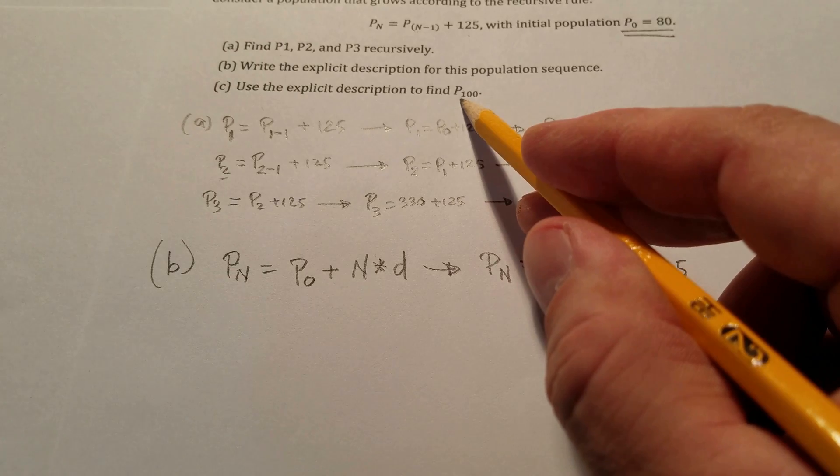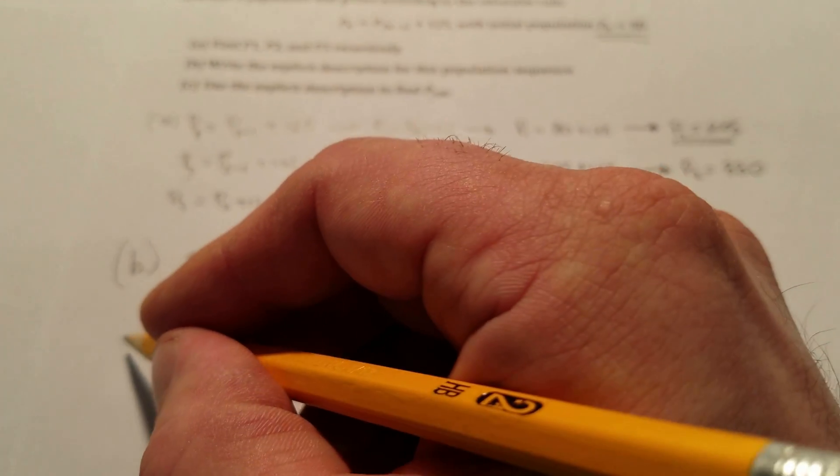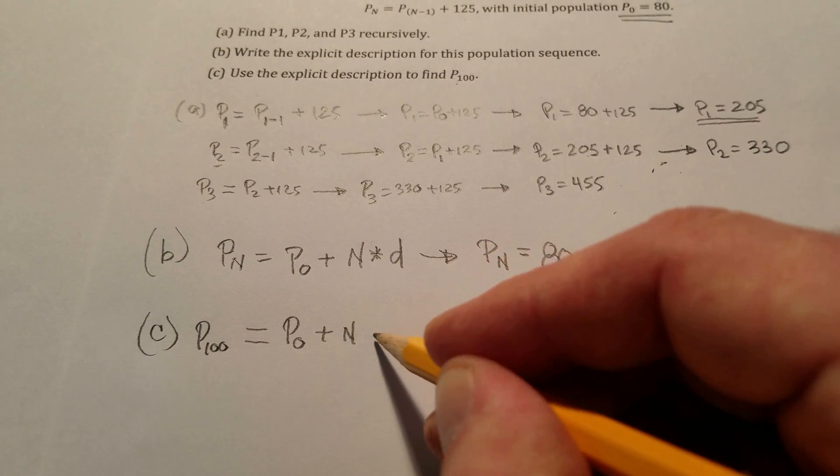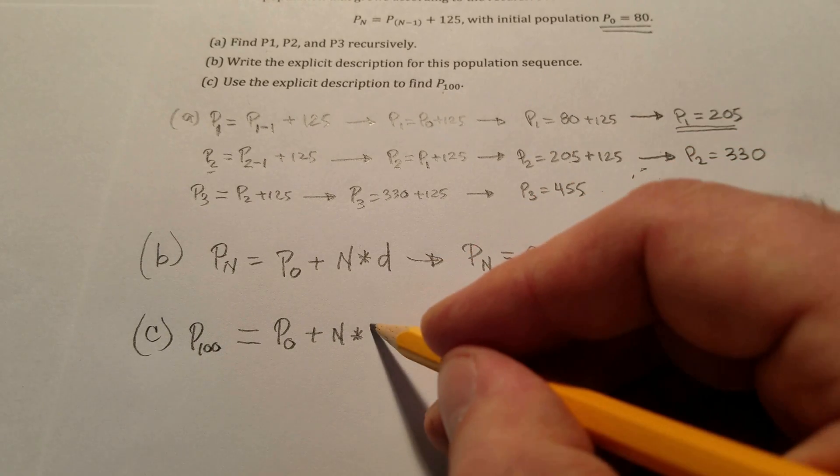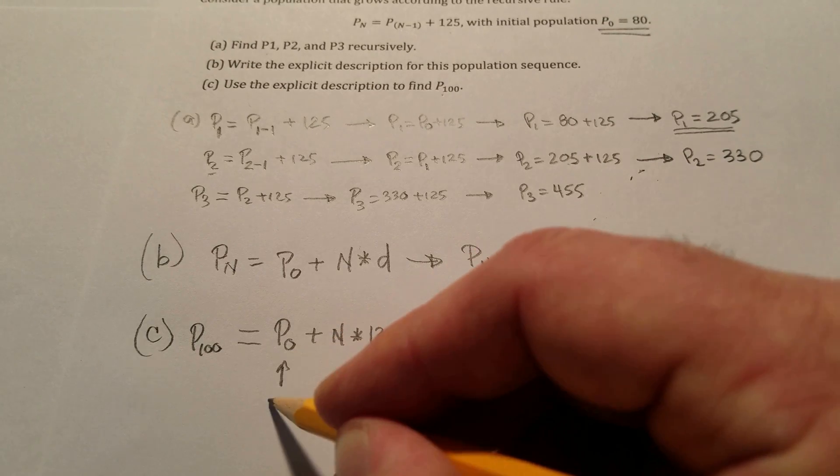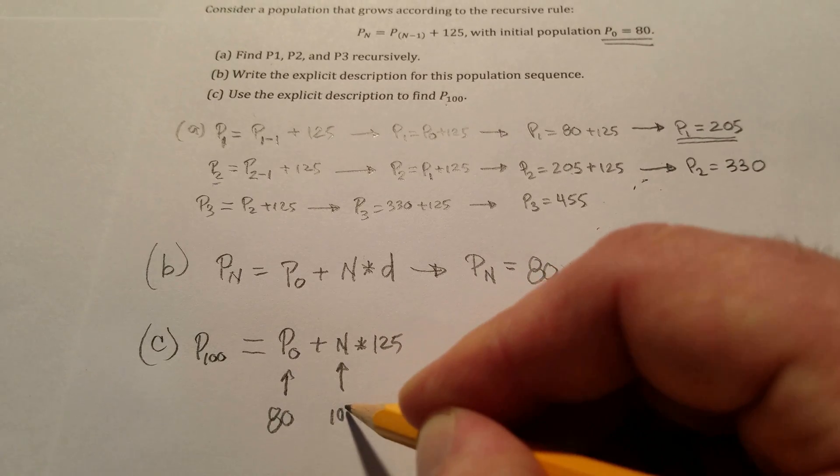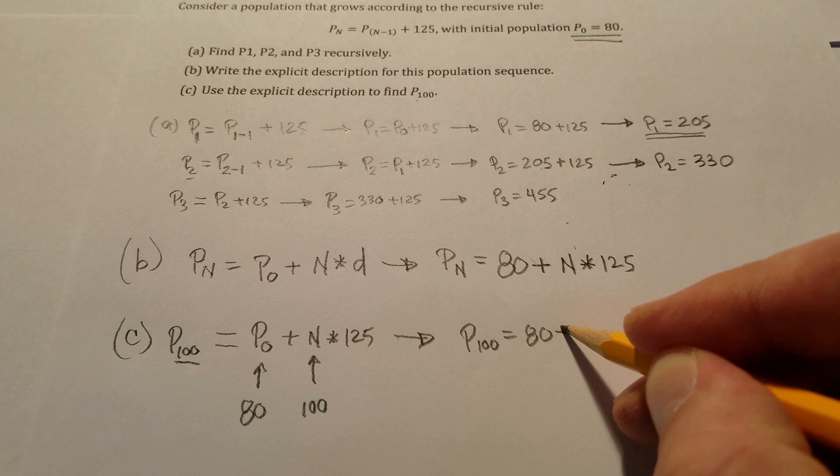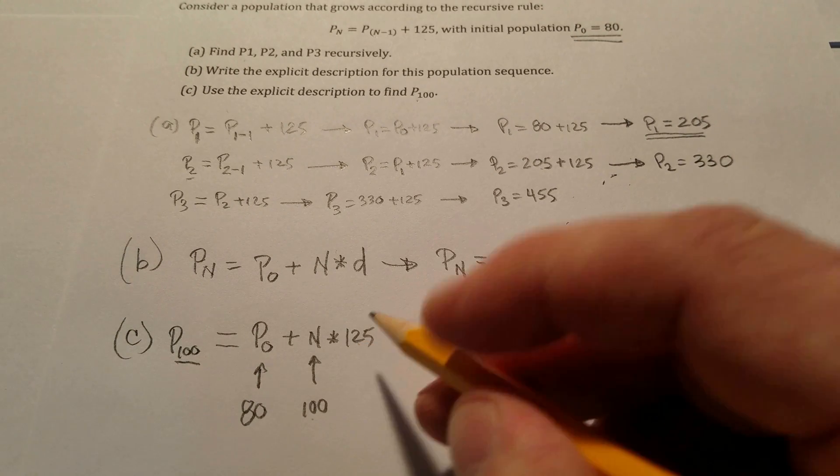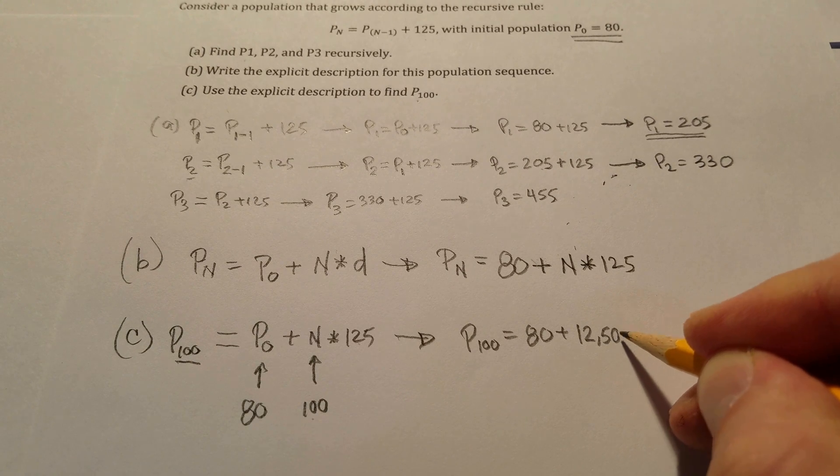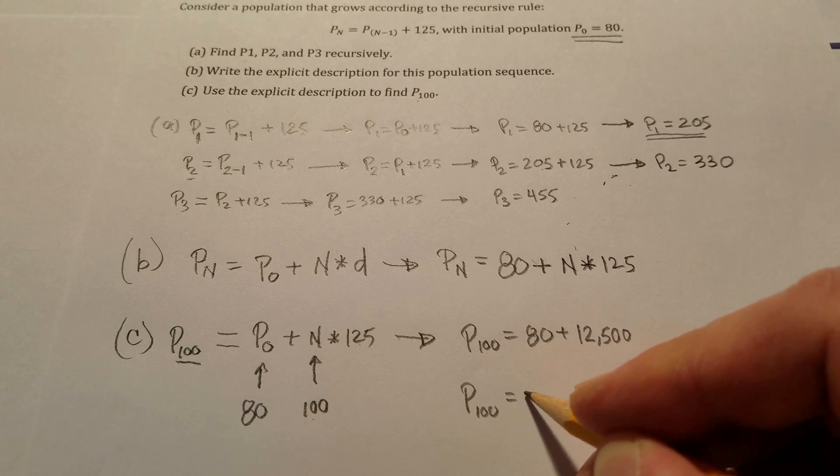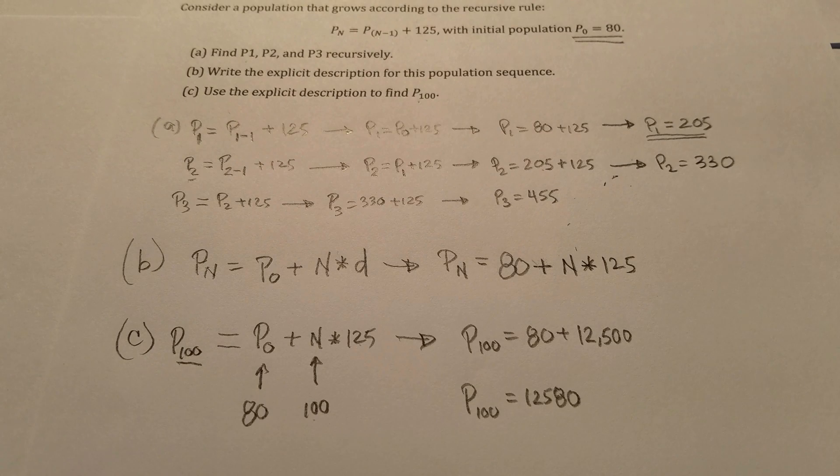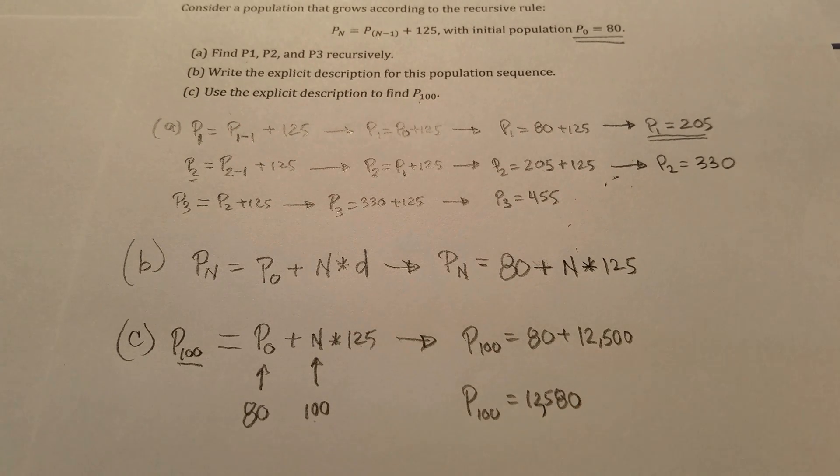Part C asks that we implement this new model to find the population of generation 100. So we're going to replace P₀ with 80 and n with 100 because it should match the subscript. 100 times 125 is 12,500, and we get that the population of generation 100 would be 12,580.